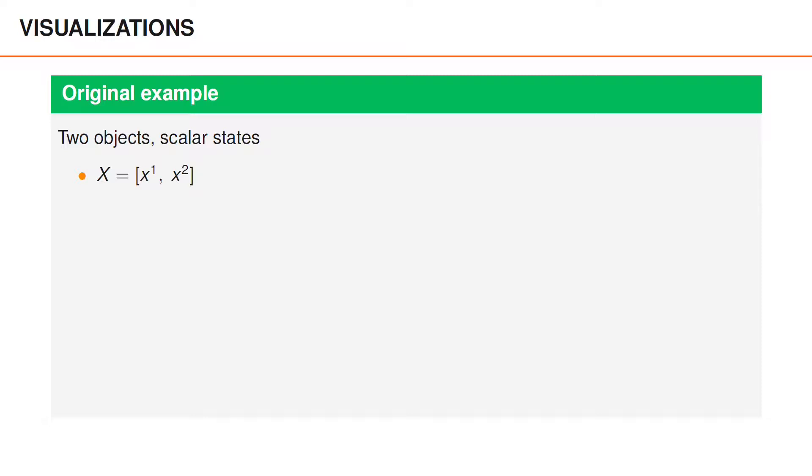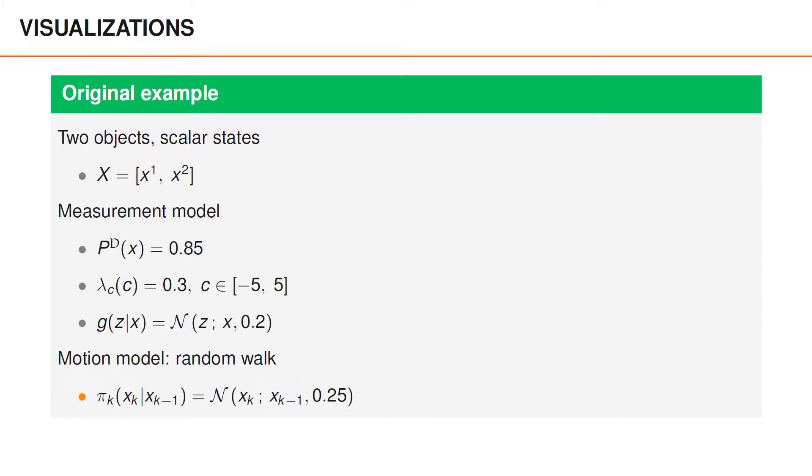We have two objects with scalar states. PD is equal to 0.85. The clutter intensity is 0.3 from minus 5 to 5 and the likelihood is Gaussian with variance 0.2. We have a random walk motion model with variance 0.25. The initial priors have mean minus 2.5 and 2.5 and variances 0.36.